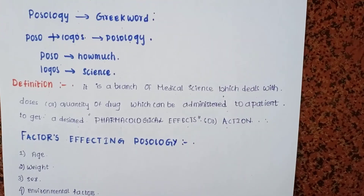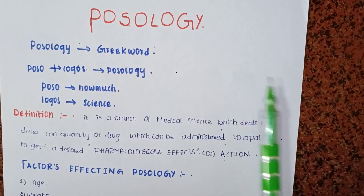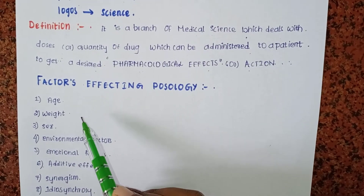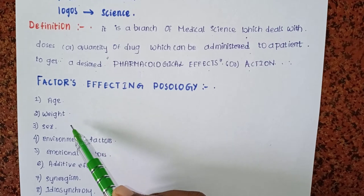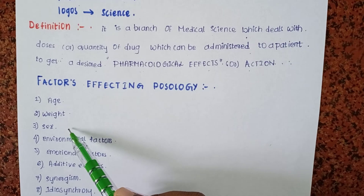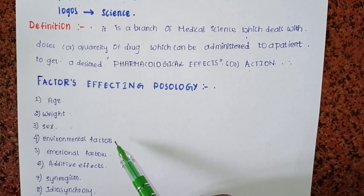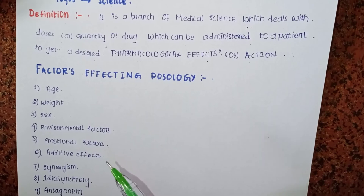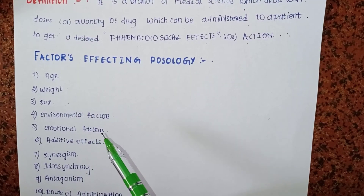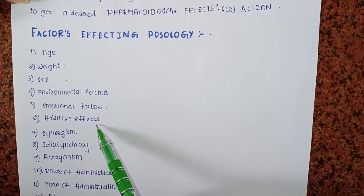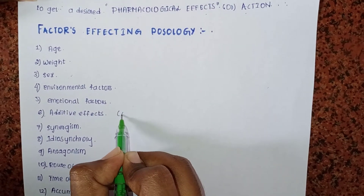So in posology there are some factors that affect it. The main factors are 16 in total. The first factor is age. Next is weight, then sex — whether they are female or male. Environmental factors such as hot places or cool places also have an effect. Next are emotional factors.